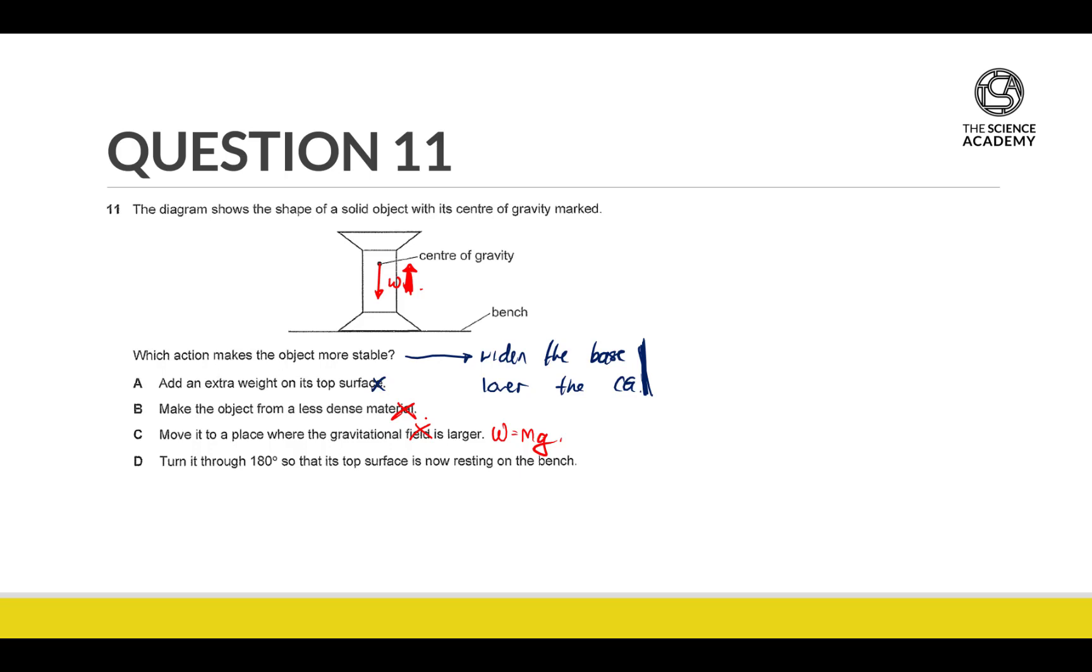If you turn it through 180 degrees so that the top surface is now resting on the bench, what is happening here? The CG is now on the lower portion. Since the CG is now on the lower portion, this has lowered the CG. So my answer is D.